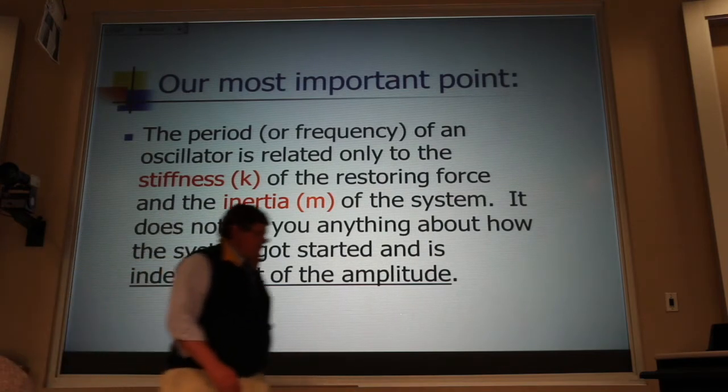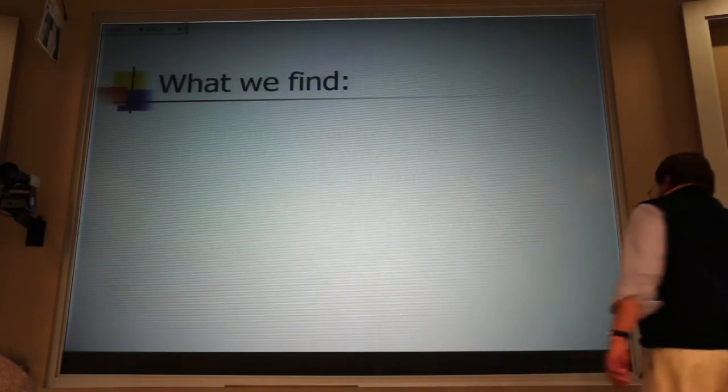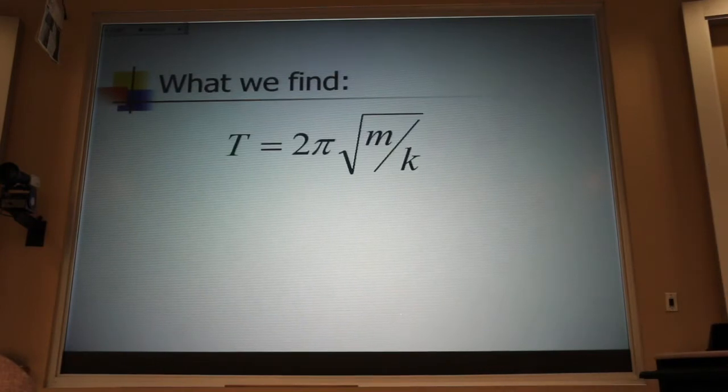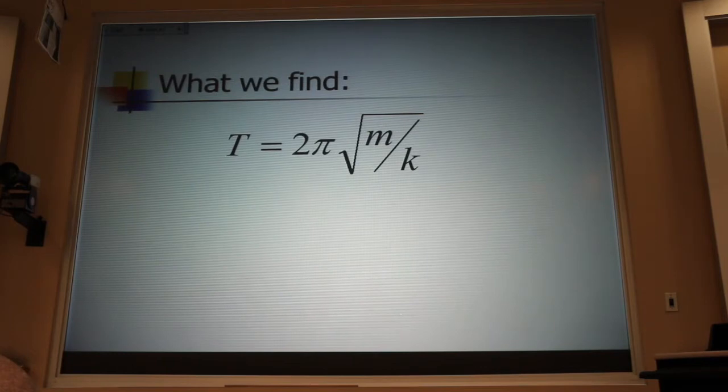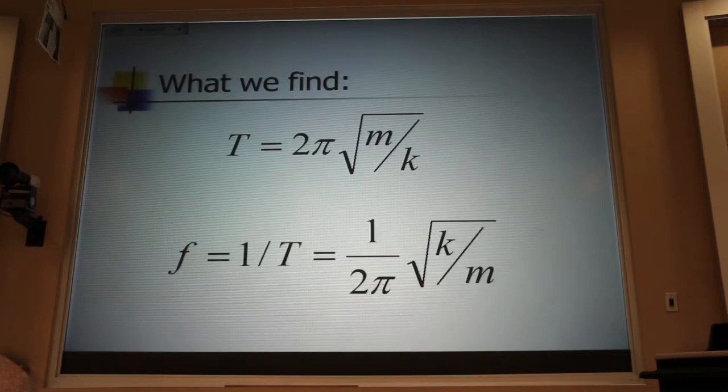Now, what we found was that the period of the oscillation depended on the mass and the spring constant in this relationship here. And we could put it upside down, and that became the frequency, because frequency was one over the period. And those formulas will be on the front page of the exam.